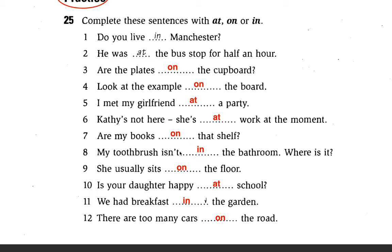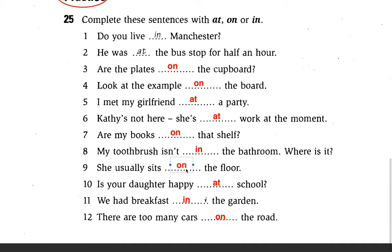Number nine: She usually sits on the floor. 'On' is the answer — preposition of place. Number ten: Is your doctor happy at school? 'At' is the answer — preposition of place.